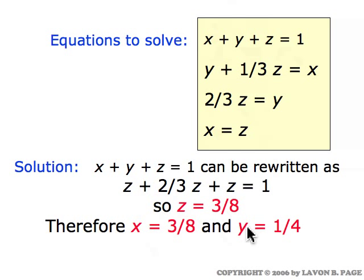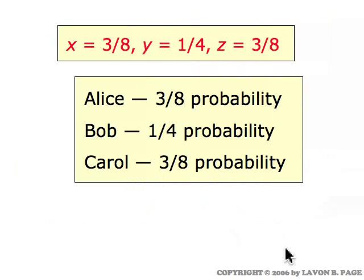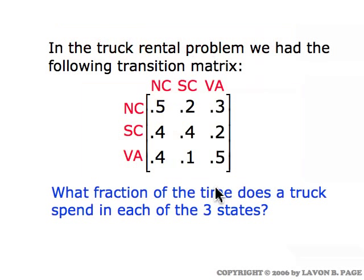What we get are the values shown here. We now have the steady-state probability distribution. When these folks are playing frisbee, the longer they toss the frisbee around, the closer it will come to this particular probability distribution in terms of who has the frisbee: three-eighths probability for Alice, one-fourth probability for Bob, and three-eighths probability for Carol.